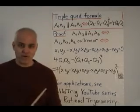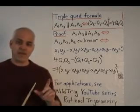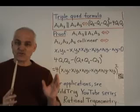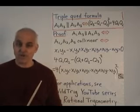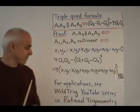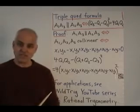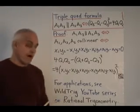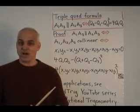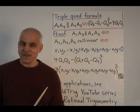This is a very important result. And with Pythagoras's Theorem, these are the two main pillars of metrical geometry in the plane. And this is all described at some length in my YouTube series called Wild Trig on Rational Trigonometry, which I strongly suggest that you have a look at.